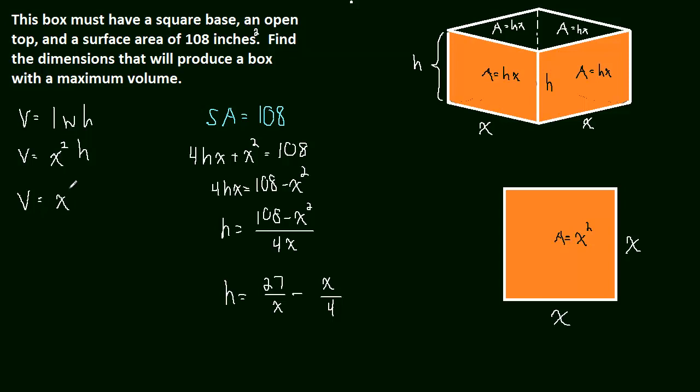So the volume is x squared times h. And we know that h is 27 over x minus x over 4. I'm just going to distribute that through. So the volume is now going to be equal to 27x, this is just algebra, one of the x's cancels here, and then minus x cubed over 4. So we have the volume function in terms of just one variable. We are almost done.